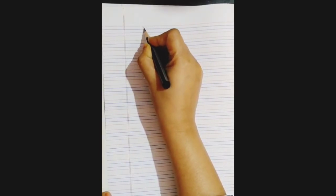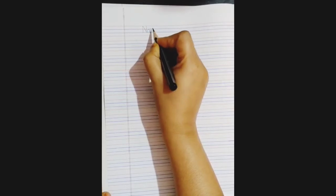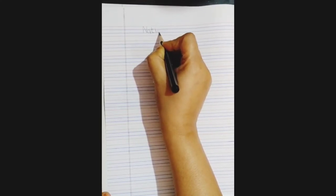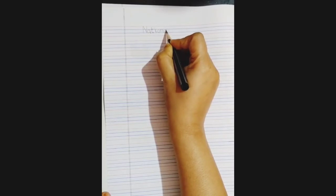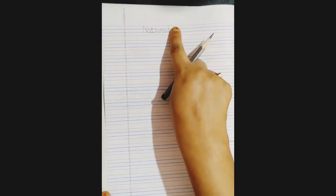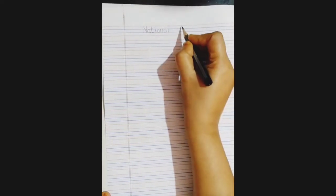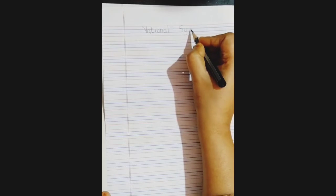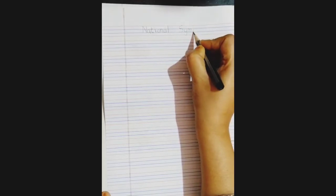So now we start writing, we'll write the heading first, that is national symbols. So a capital N, and then a small A, T, I, O, N, A and L. National. Give one finger space and then we will write symbols. A big S, Y, M, M, symbol, B, O, L and S. National symbols.